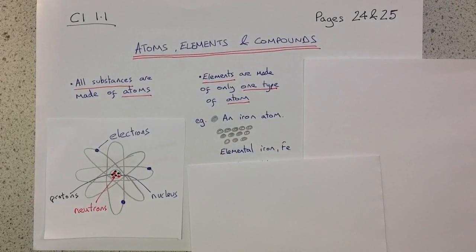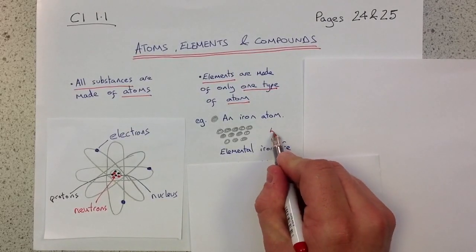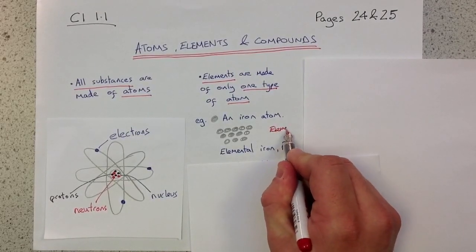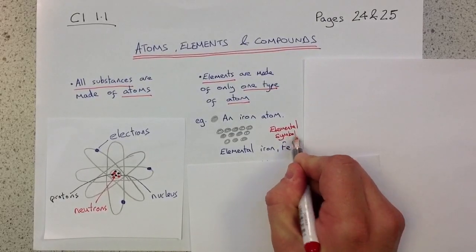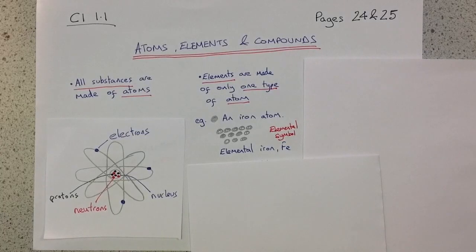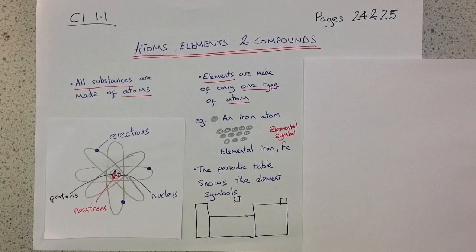Elemental iron, shown there. Also, you notice the symbol, Fe. That is the elemental symbol for iron. We show chemical symbols and elemental symbols in the periodic table.